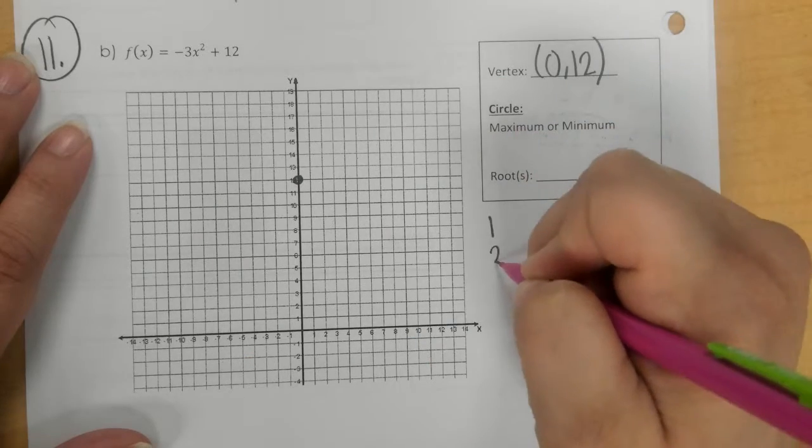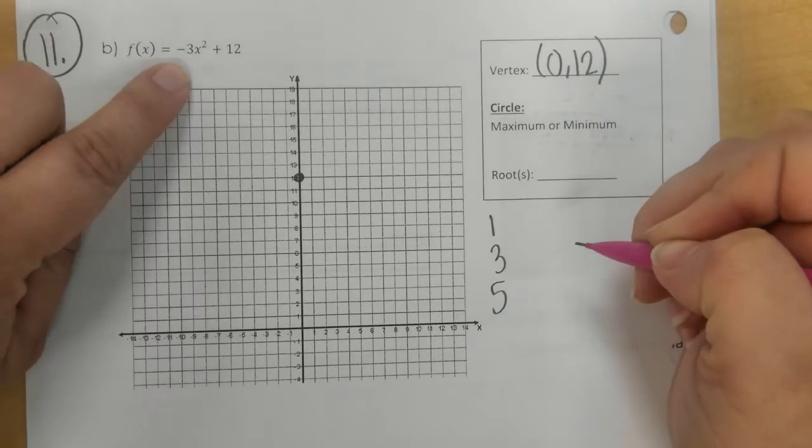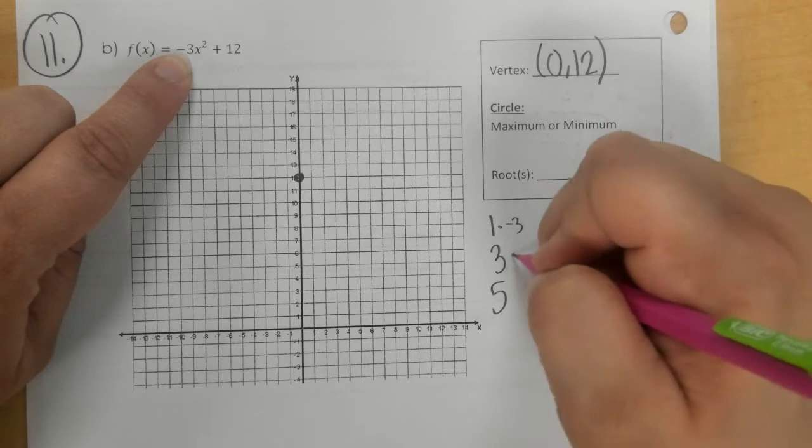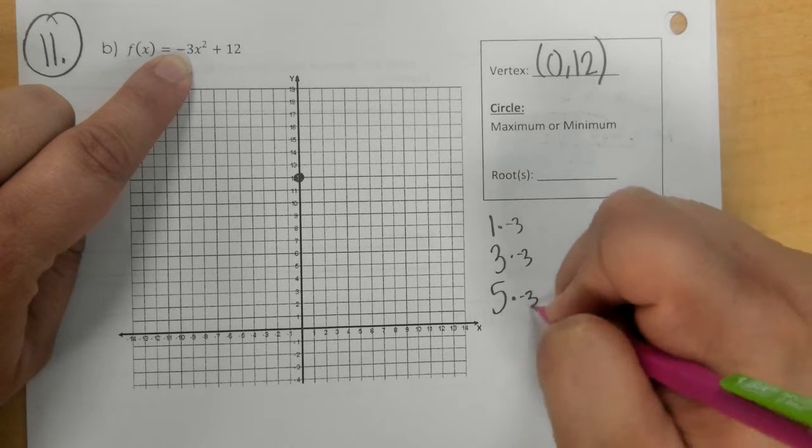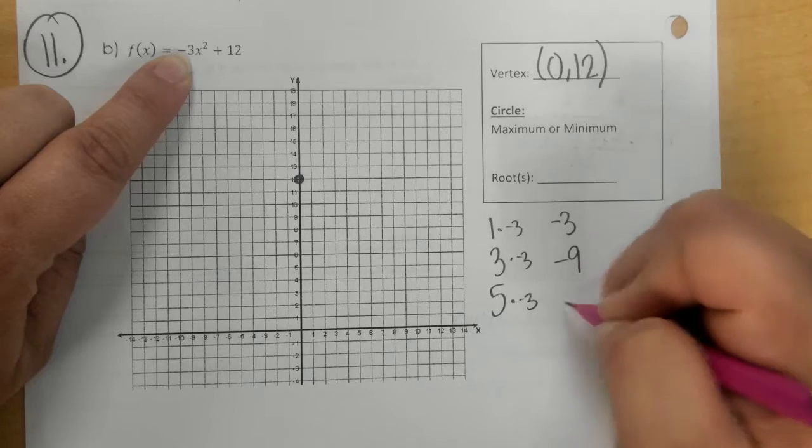We have 1, 3, 5 as our pattern, and we need to multiply it by A. A is negative 3. Our new pattern is negative 3, negative 9, negative 15.